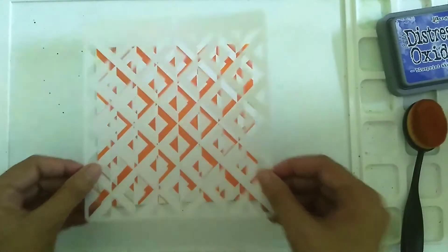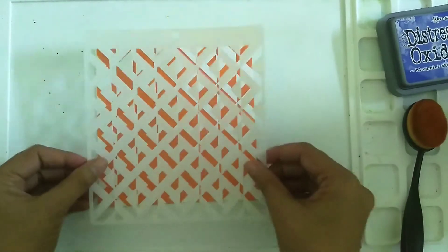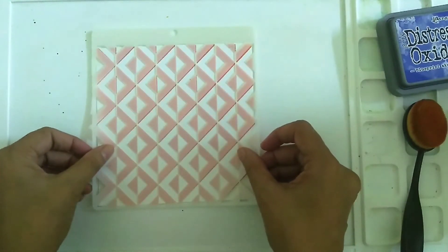Now that our orange background is dry, I'm going to do the second color, which is blue. I'm just going to flip the stencil over so that now the orange inked areas are covered.